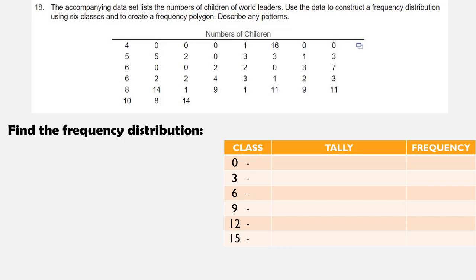So the first upper class limit is 1 less than 3, which is 2. We add the class width of 3 here and get 5. And we continue to add 3 to get 8, then 11, 14, and 17. So now we have our defined classes, and we're ready to build our frequency distribution.